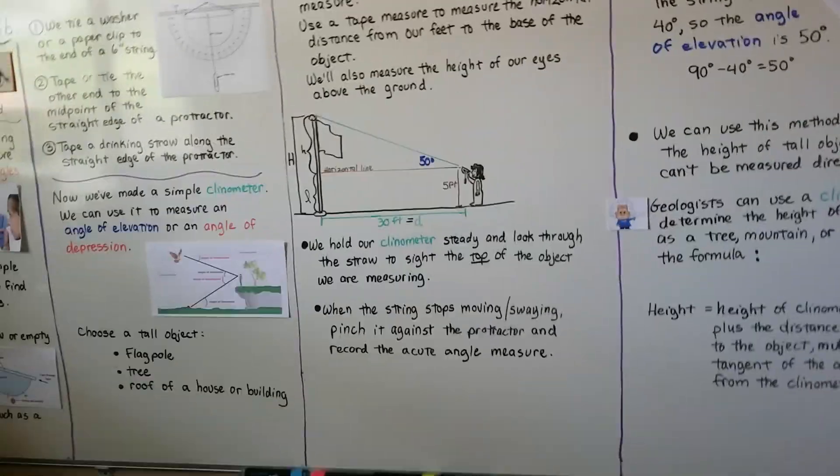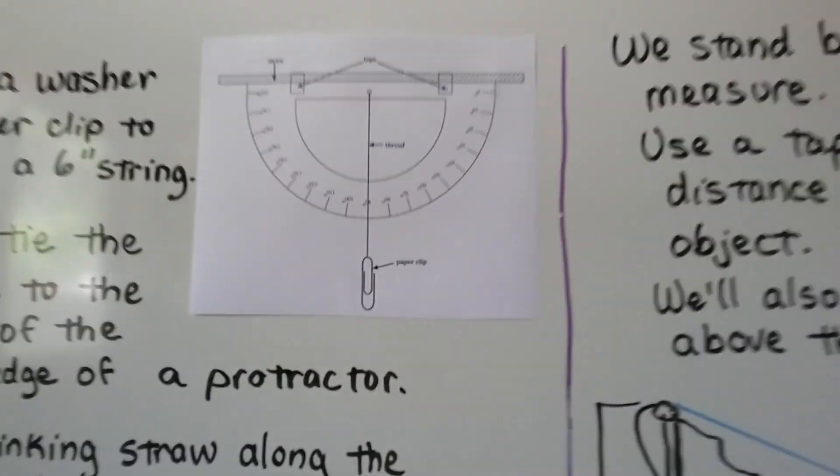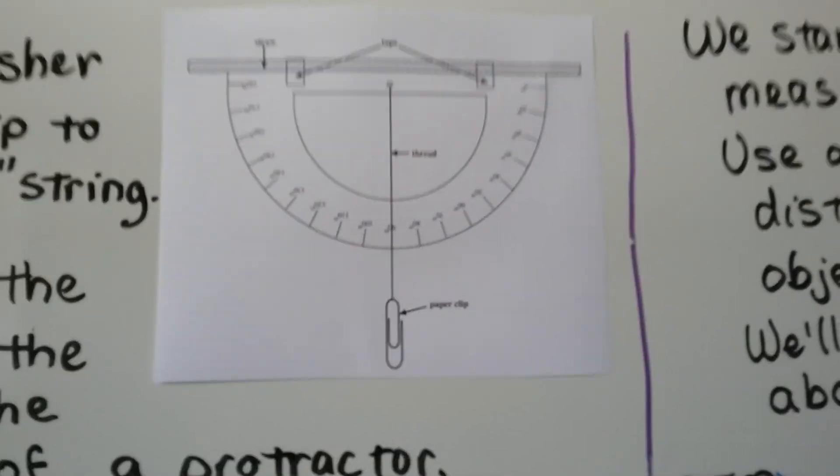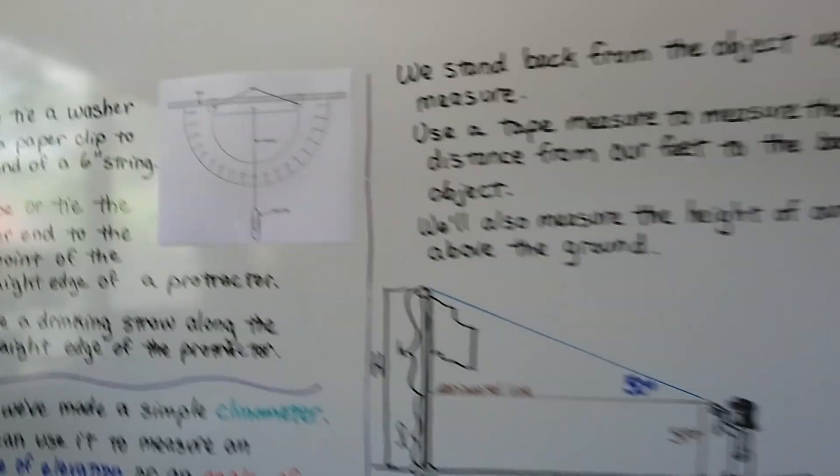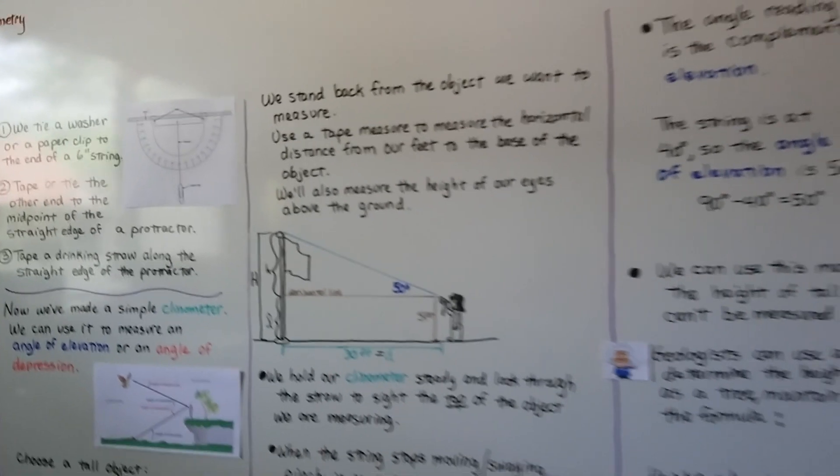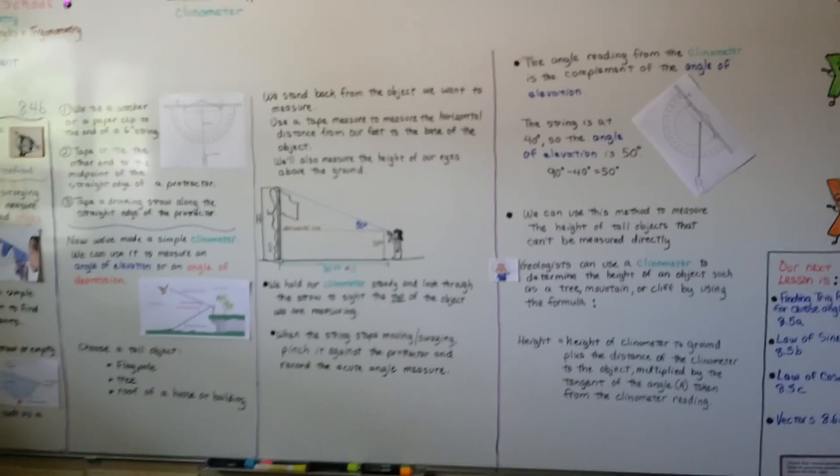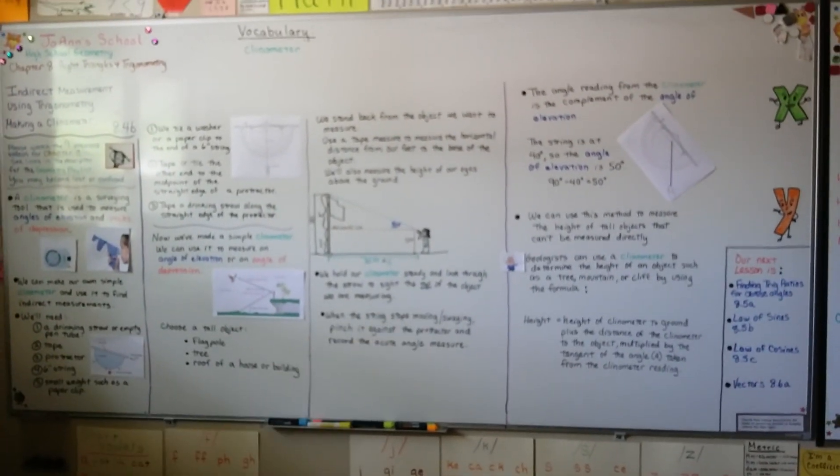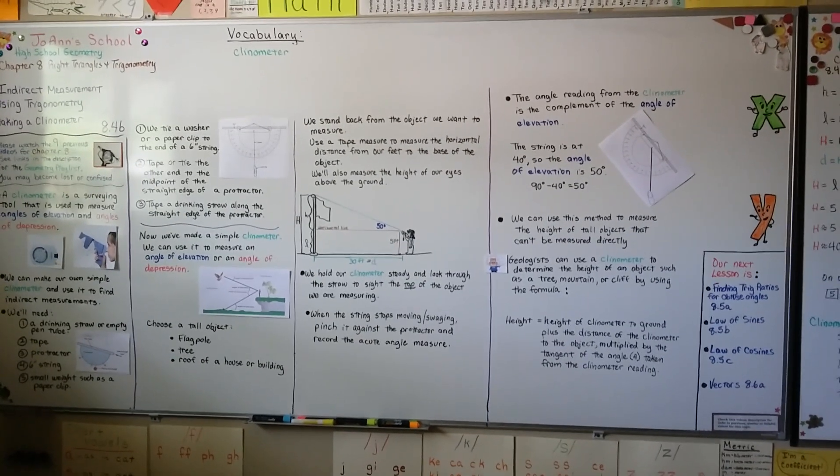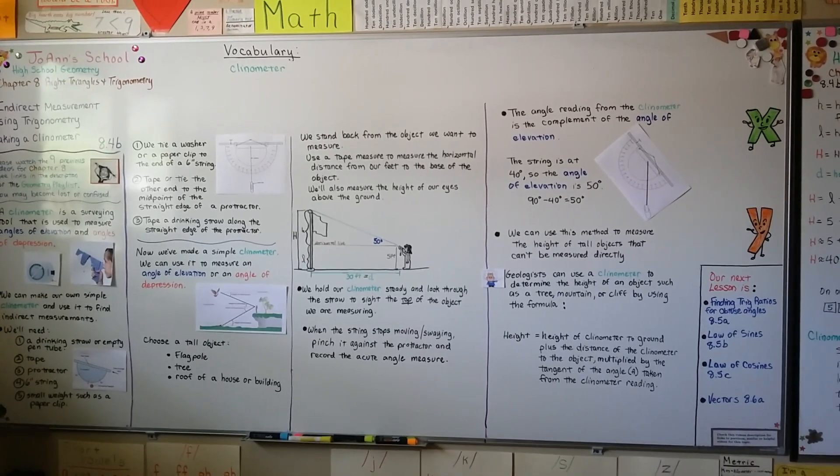So, you can try making your own clinometer. Just make it look like this. And then go outside and see if you can find a tall object and figure out what its height is. So, remember you have to measure the horizontal distance between you and the object and remember that it's going to be the complement of the angle of elevation.